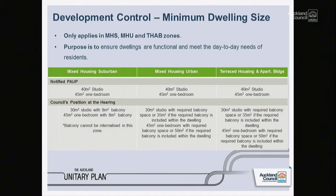Mixed housing urban: 30 square metres for a studio, and 35 if the balcony was included within the dwelling, and 45 square metres for one bedroom with a required balcony space, or 50 if the balcony was included as an internal enclosed balcony within the dwelling. Terrace apartment building zone has the same control as mixed housing urban. So fairly technical controls with some changes proposed by the council for those three zones.